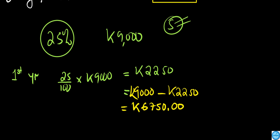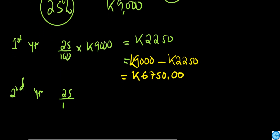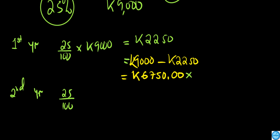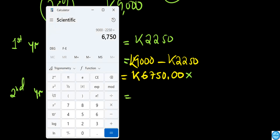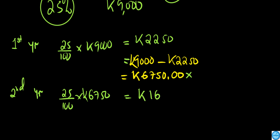At the end of year two, in the second year, we need to find 25% again. This time we find 25% of 6,750. According to my calculator, 25% of 6,750 is 1,687.5, which rounded to the nearest whole number is 1,688.